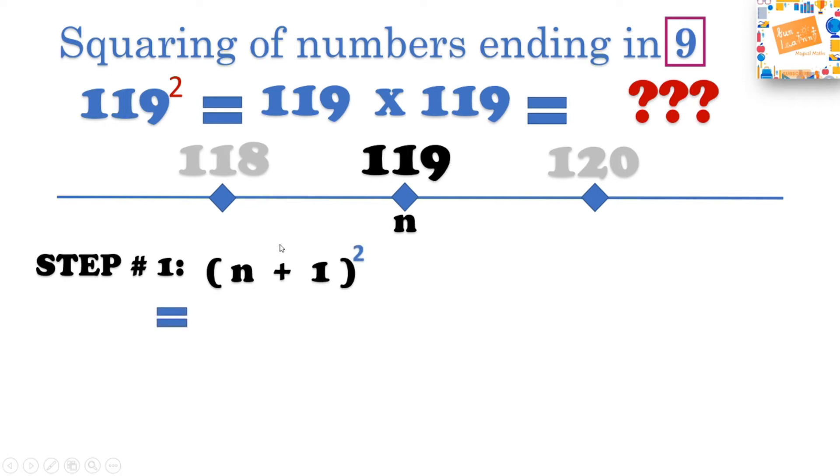Let's go for our step 1, which is n plus 1 square, that is squaring the nearest 10, which is 120 in this case. So I square 120. The way to square it is 120 times 120, which is equal to add two zeros in the end and then 12 times 12, which is 144. So our step 1 answer is 14400.